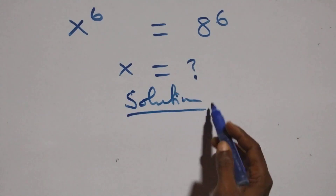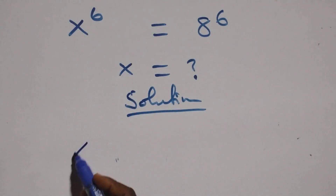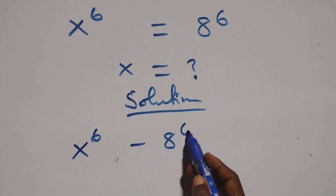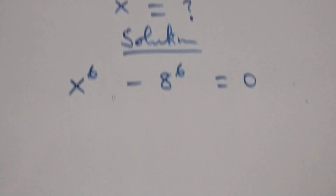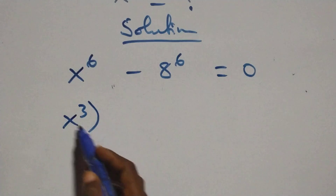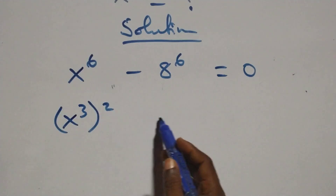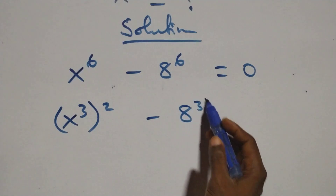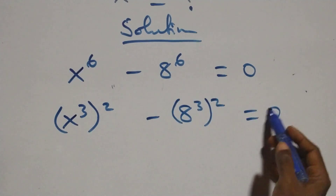What we have here, we take a raised to the power 6 from the left hand side, that is we have x raised to the power 6 minus a raised to the power 6 equals to 0 here.